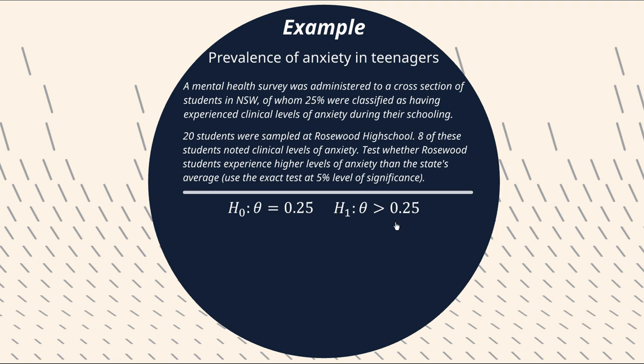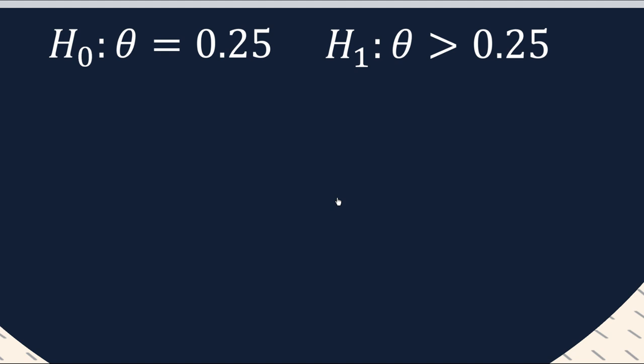Remember my hot tip for null and alternate hypotheses? Whatever you're seeking evidence for goes in the alternate hypothesis. So we're testing whether Rosewood students experience higher levels of anxiety than the state's average, which is 25%. So that goes in our alternate hypothesis, with the converse going in our null hypothesis. So you could put here less than or equal to 0.25, but I'm just putting straight equal to 0.25. That's a convention thing. You could go either way with that. It's actually the alternate hypothesis that's more important.